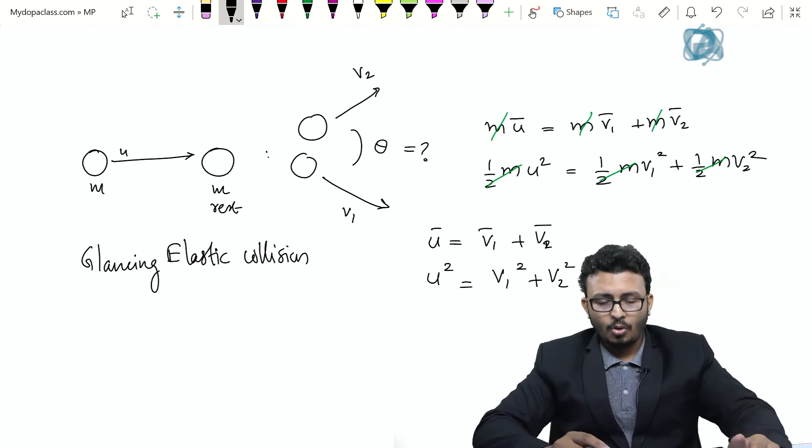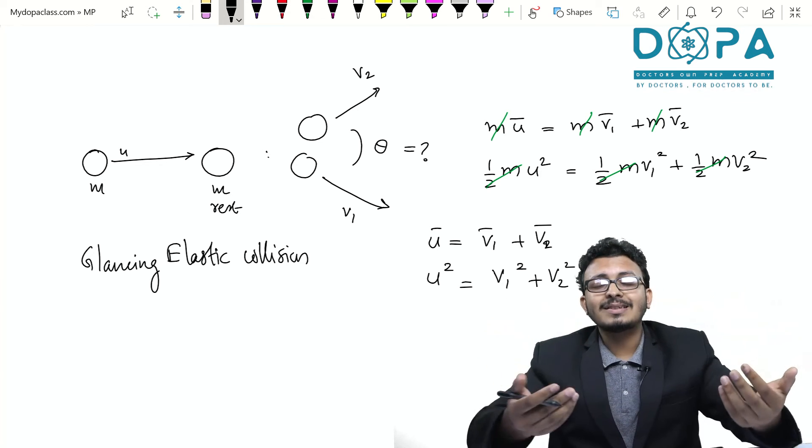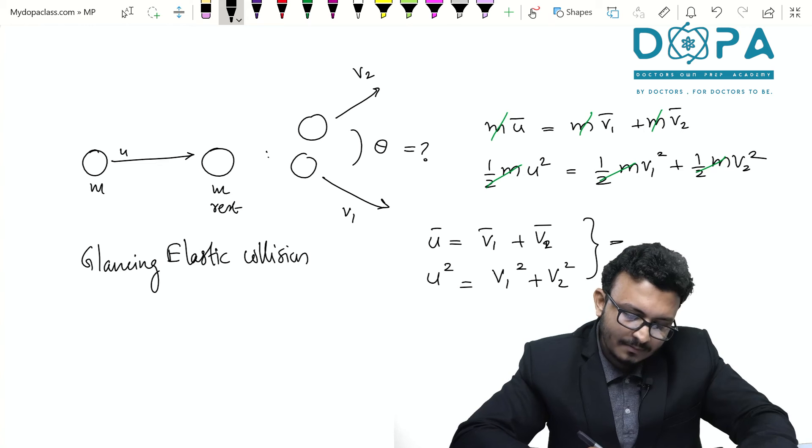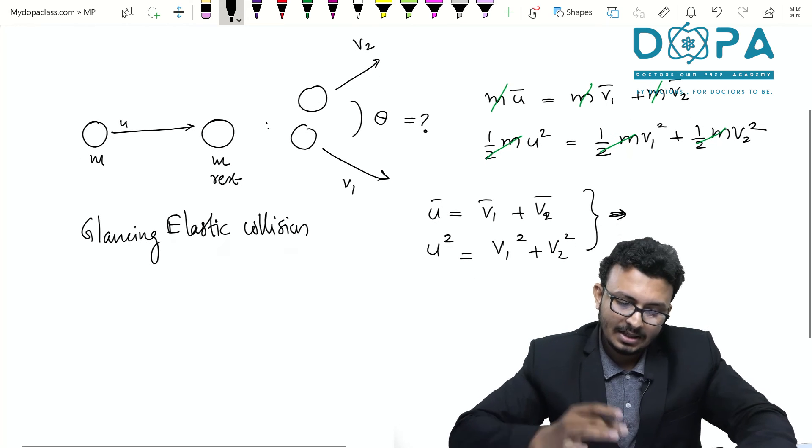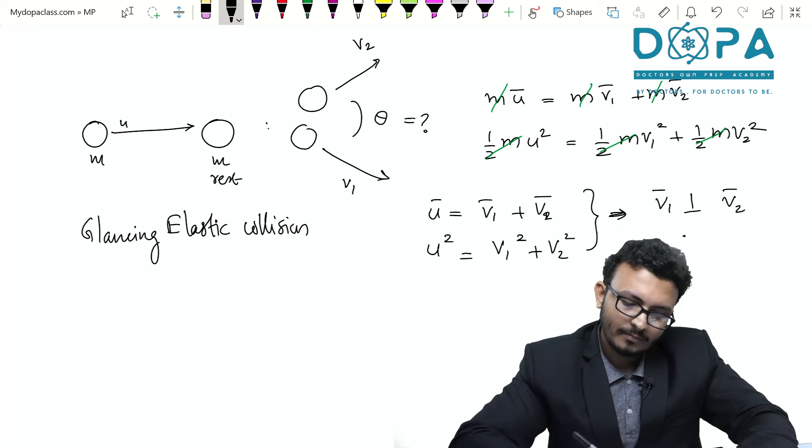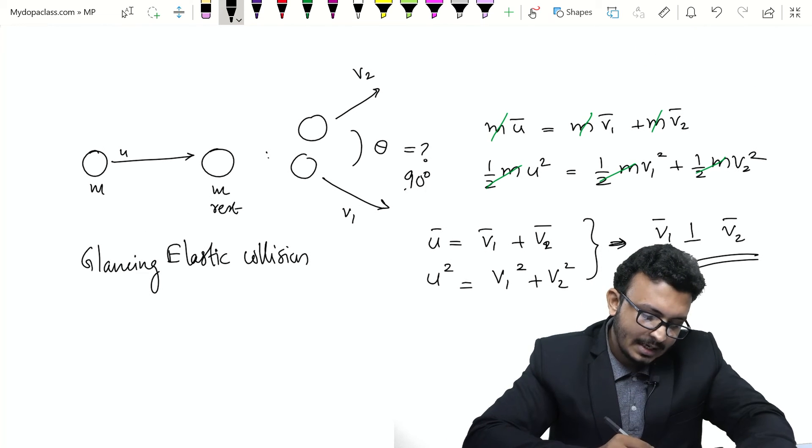Now we know when you add two vectors and the resultant, the square of the resultant is actually the sum of the square of two vectors. That implies V1 is perpendicular to V2. All right. So the angle between them is always 90 degrees.